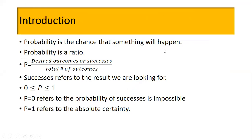Probability is basically the chance that something will happen — it is a ratio. The range of probability varies from zero to one. Zero probability means the chances of success are impossible, and probability one refers to absolute certainty of an event happening. It can be expressed as a percentage, decimal, or fraction.